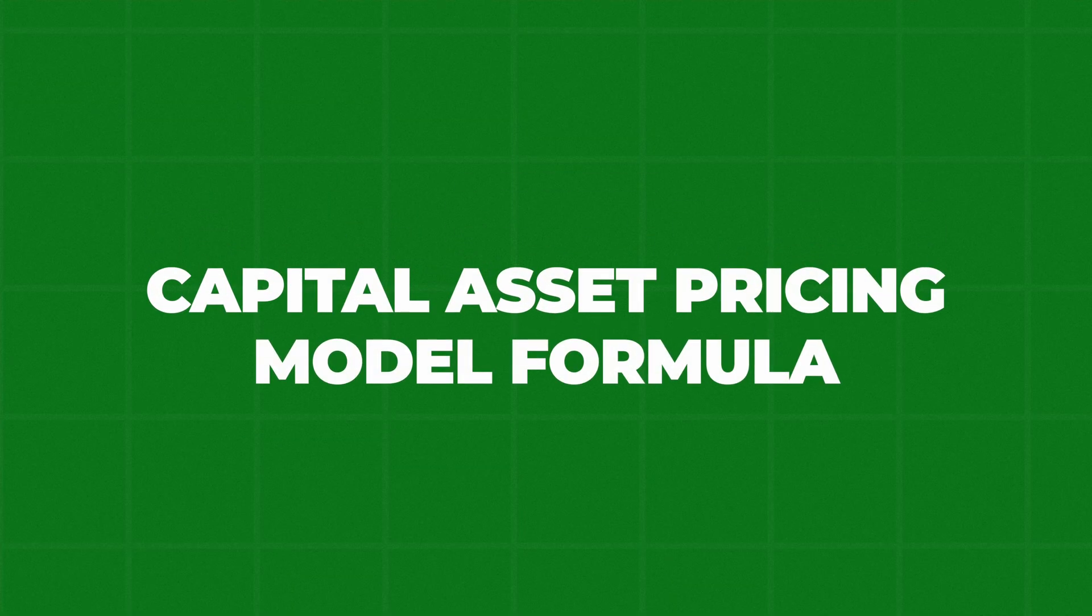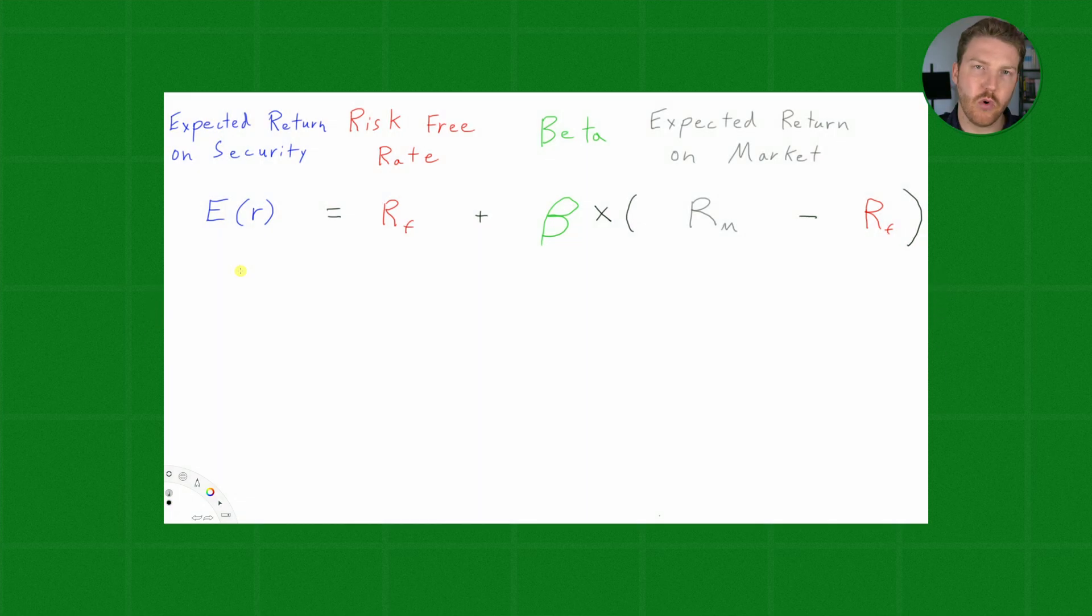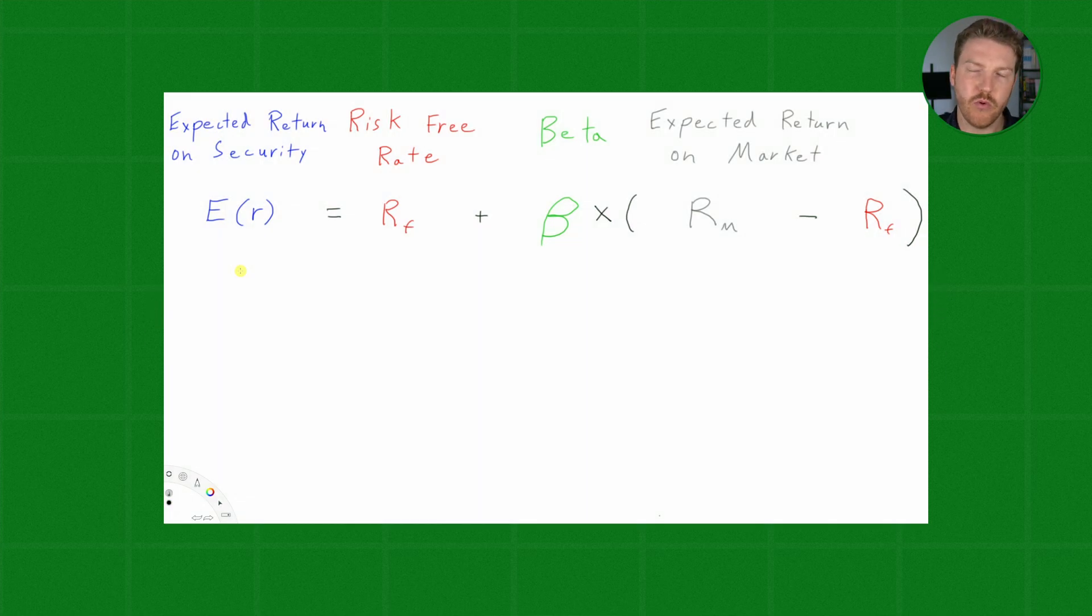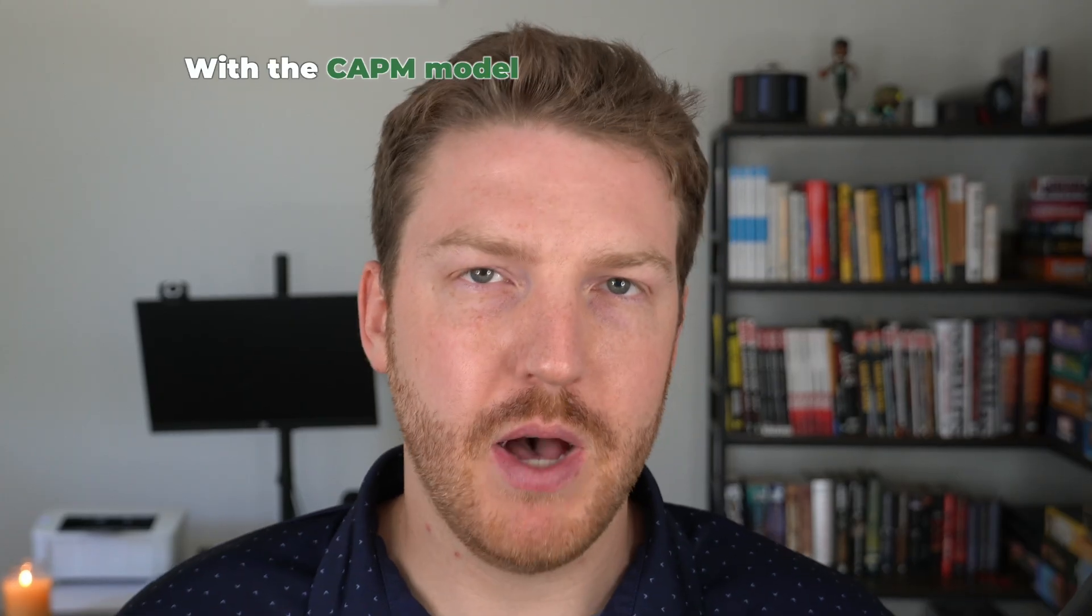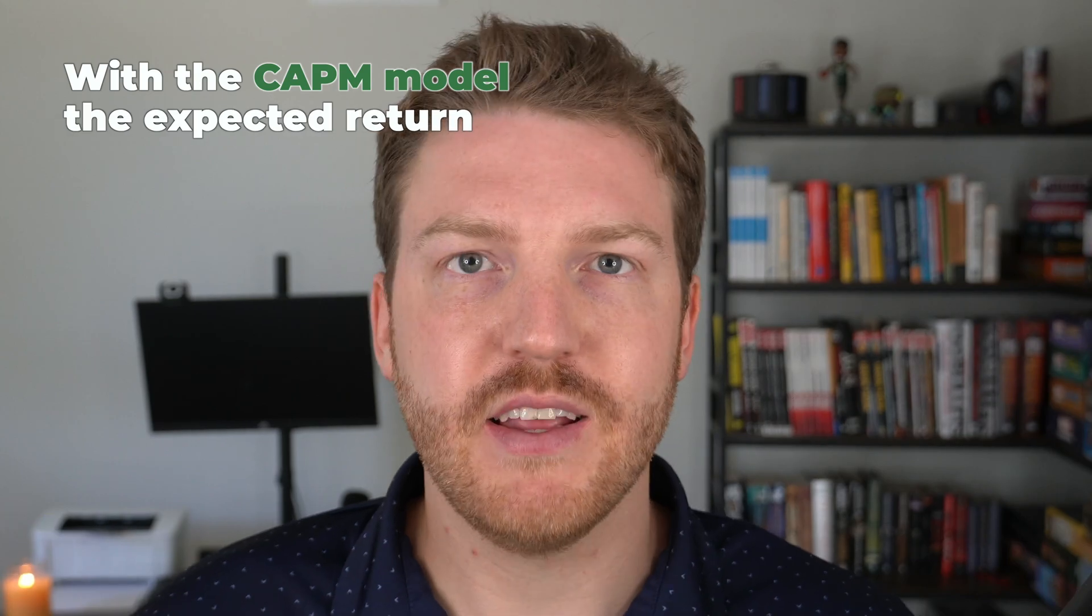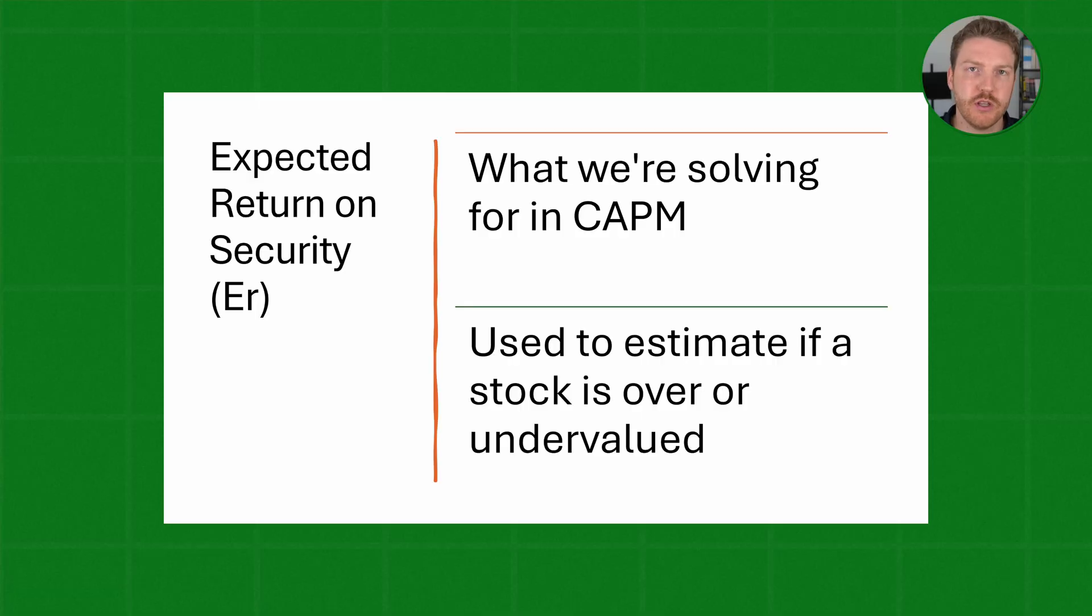The capital asset pricing model formula has just four variables, and we'll go through all four in order, starting with the expected return on the security in question, denoted as E(r). With the CAPM model, the expected return on a security is what we're actually trying to figure out. It is our end result, and we will use the estimate of the expected return to figure out whether we think a stock is either over or undervalued.